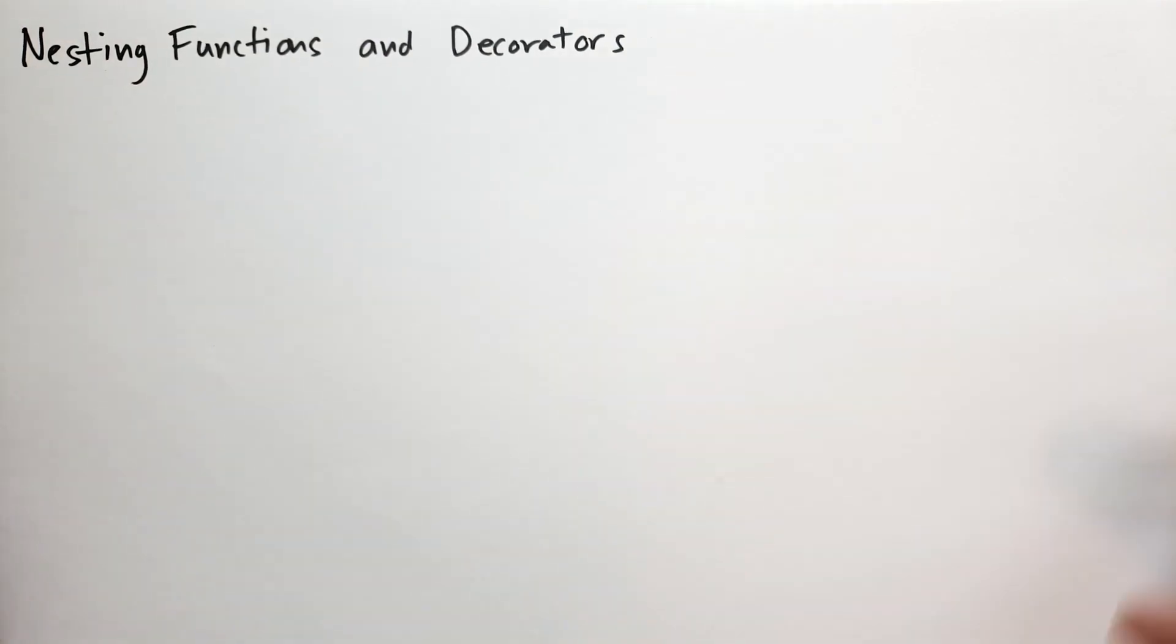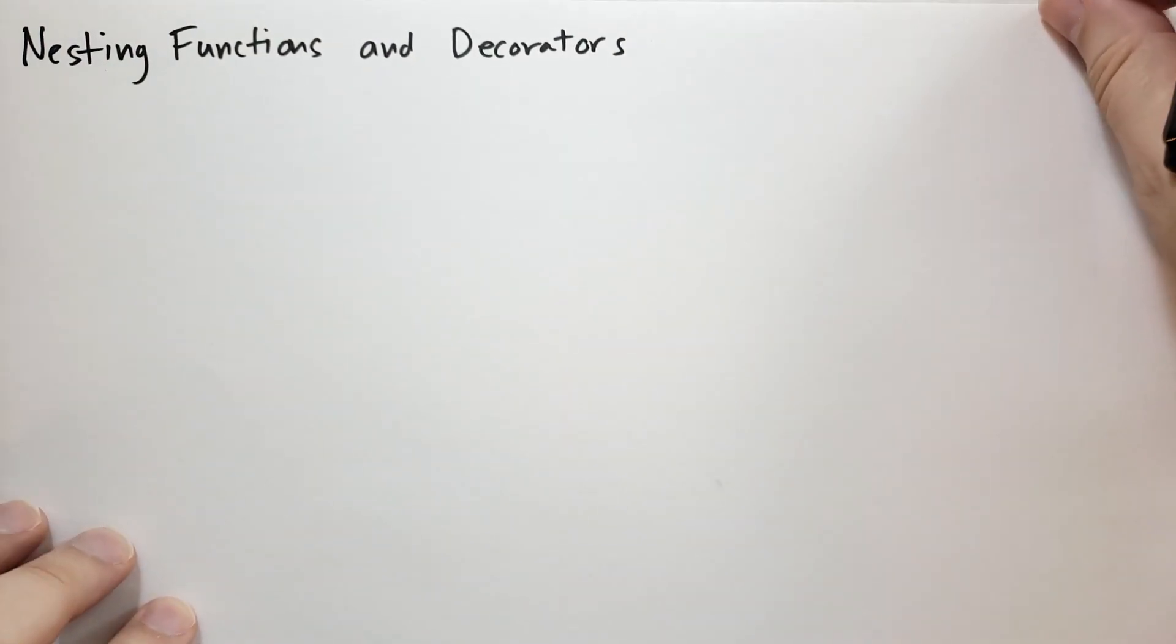You might have heard of something called partial functions. You might want to create a function that partially fills in some of the parameters, and then when the additional parameters come in, it actually gives you the result. You have various situations in Python where you need to actually create functions, return them as a result of a function, and also typically this arises when you have decorators.